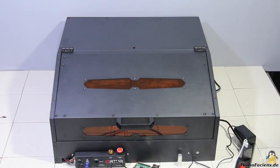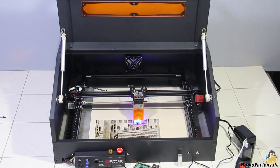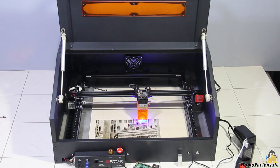In a second care package from Ortur there was a metal box that is available as an extra and which encloses the laser engraver. This box fulfills several protective functions.